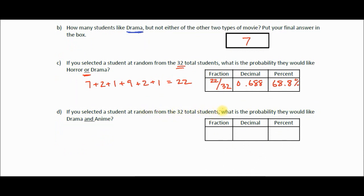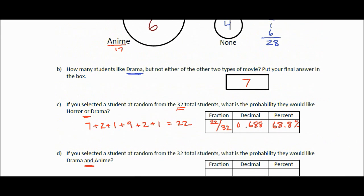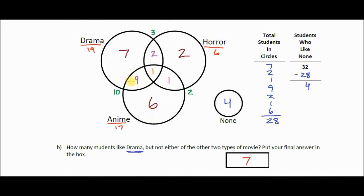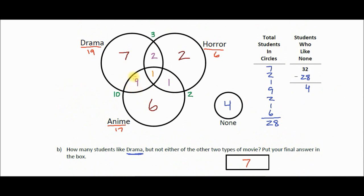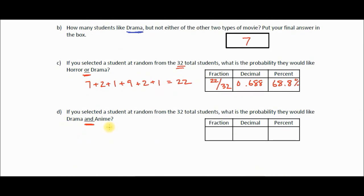Last one: if you select a student at random from the 32 total students, what's the probability they would like drama and anime — they have to like both. The nine students who like drama and anime only, plus the one student who likes drama, anime, and horror, both count. That gives us 9 plus 1 equals 10. So our probability is 10 over 32, which is 0.313 or 31.3%. And that is the end of the review sheets.